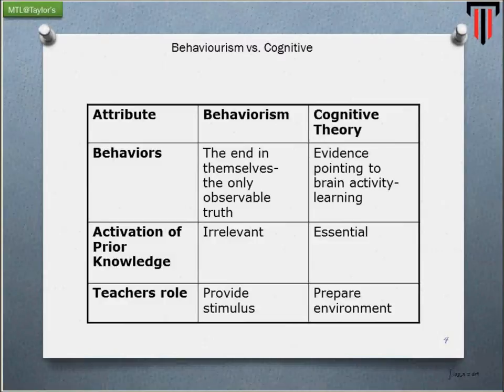Activation of prior knowledge is irrelevant from the behaviorist perspective because they don't care what you know before you participate in an experiment. Whereas from a cognitivist point of view, it's essential because new knowledge is piled on to old knowledge. When you teach something to 20 students, all 20 are going to interpret what you say differently, because they must reconcile new information with old information already in long-term memory. From a behaviorist point of view, that's not relevant at all — it's just repeating a particular target behavior.